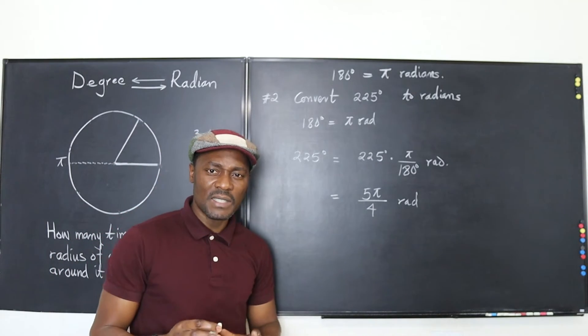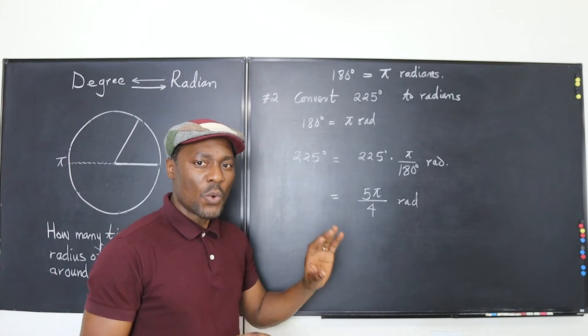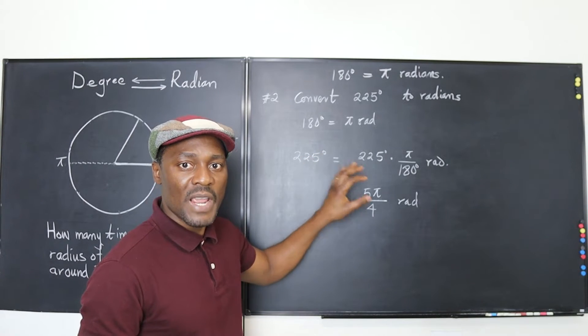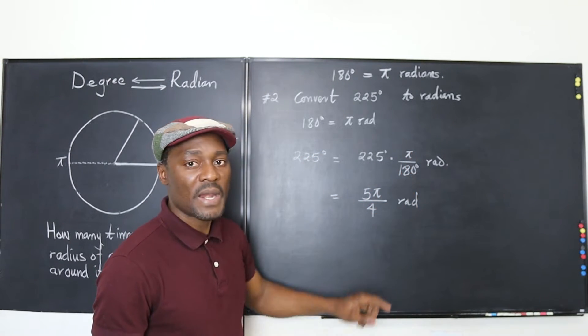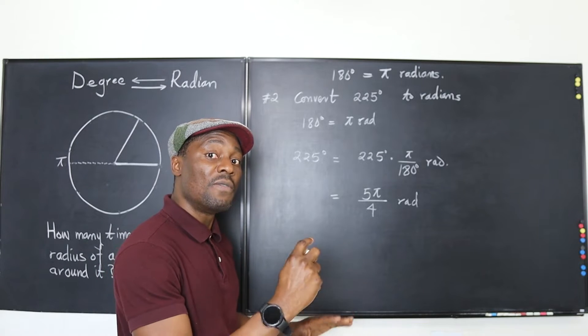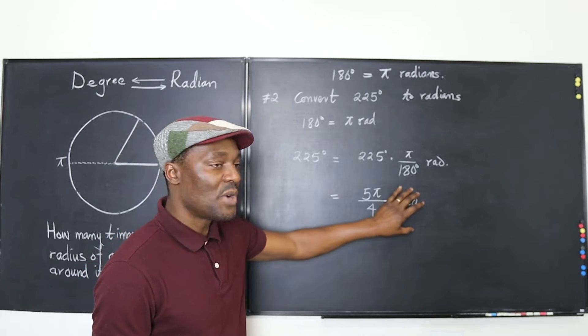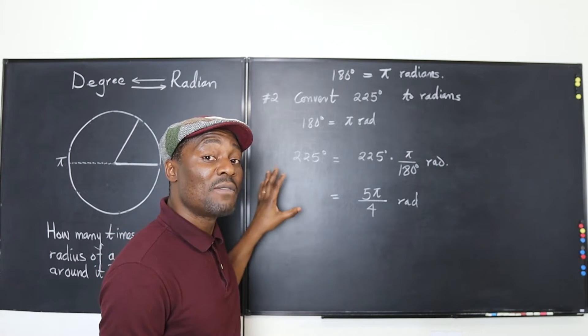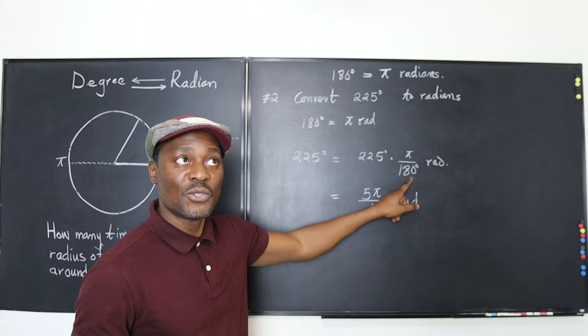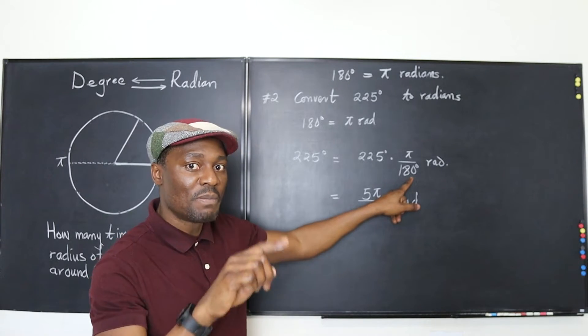So this is very simple converting. In order to convert degrees to radians, just multiply the degree angle you're given by pi over 180 degrees. Now we're going to do the reverse. We're going to move things from radians to degrees. And all we have to do is to multiply whatever radian measure we have by the reciprocal of this, which should now be 180 over pi.